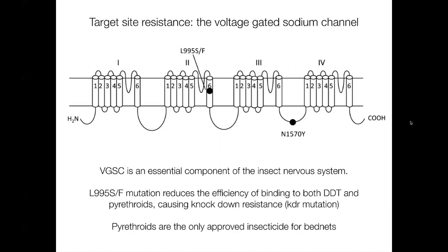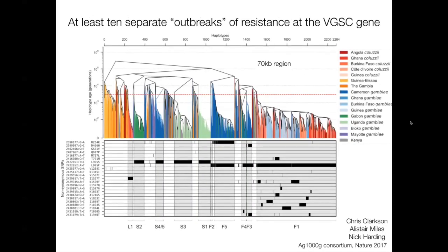Insects tend to evolve the same amino acid change — it's a convergent mutation — a leucine to phenylalanine change in this voltage-gated sodium channel. Many studies will just look at that site to determine whether a population has resistance. We know that West African mosquitoes tend to have the phenylalanine mutation and East African mosquitoes tend to have the serine mutation, so it looks like there are two arisals of this resistance. But when we look more deeply at haplotypes across the full 70 KB region that the VGSC gene comprises, you can see each black bar represents a set of mosquitoes in which a haplotype has newly arisen with that resistance-conferring mutation, but on a different haplotypic background.